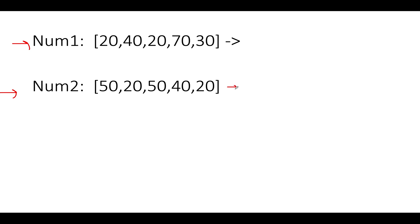Let's calculate the total sum of both arrays. For nums1: 20+40=60, 60+20=80, 80+70=150, 150+30=180. For nums2: 50+20=70, 70+50=120, 120+40=160, 160+20=180. So both arrays have a total sum of 180.